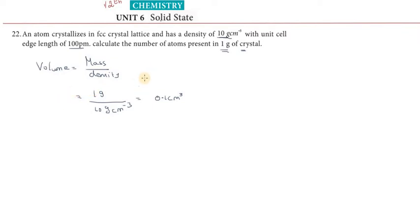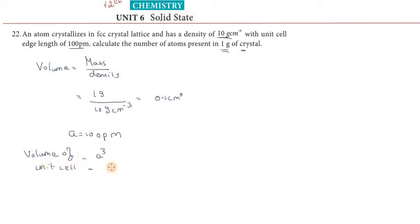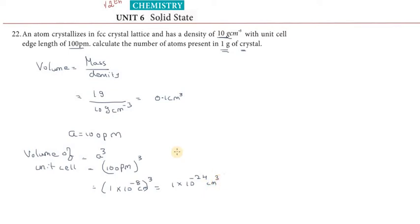Next, we calculate the volume of a single cubic unit cell. With edge length a equal to 100 picometers, the volume equals 100 picometers cubed, which equals 1 into 10 to the power minus 24 centimeters cube. This is the volume of one unit cell.